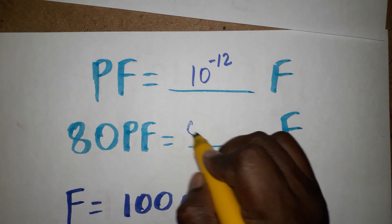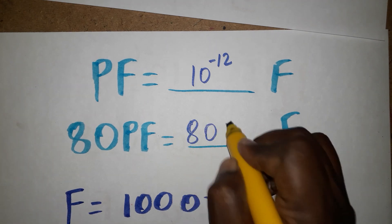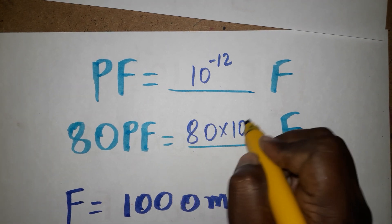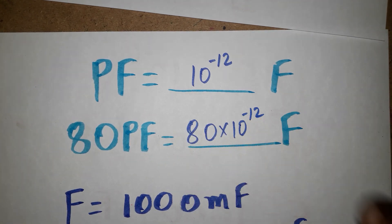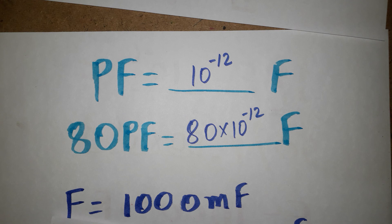So finally: 1 picofarad is equal to 10^-12 farads. In the case of 80 picofarads: 80 into 10^-12 farads. Thank you for watching my channel — if you like my channel, please subscribe. Thank you everyone.